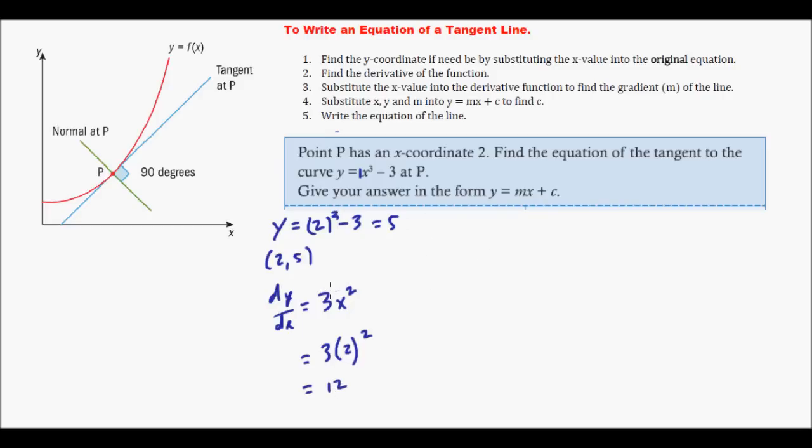Now we have our x value and our y value, and we have m which is 12. So we're going to sub it in to the equation y equals mx plus c. y equals 5, m equals 12, x equals 2, plus c. So we get 5 equals 24 plus c, subtract the 24, you get negative 19 equals c.